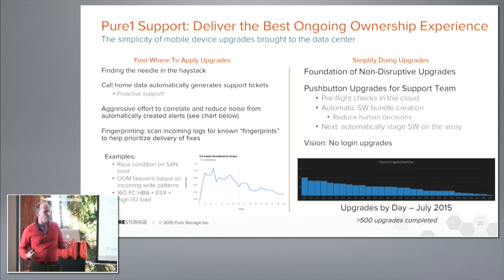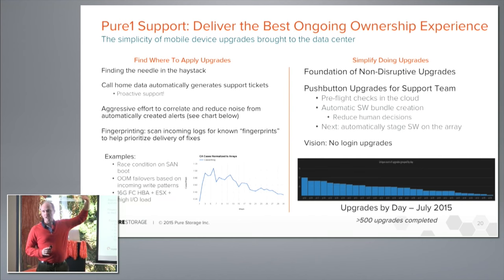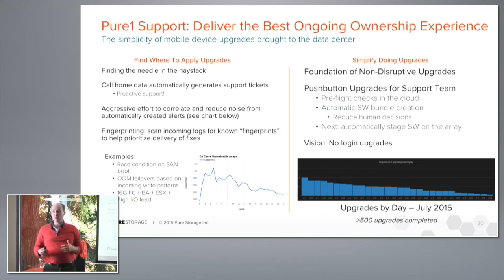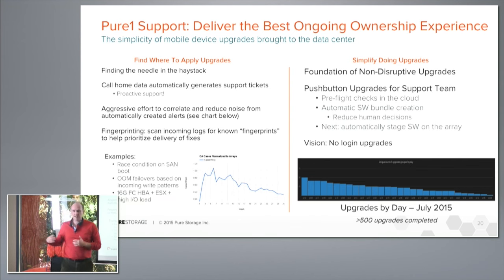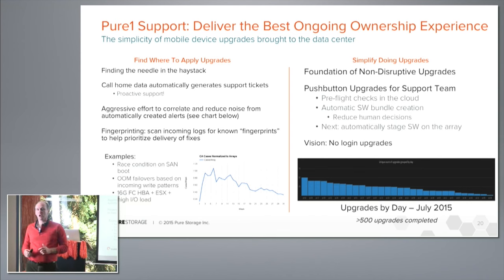As our business grows and the number of arrays scales, it's very important for us to focus our support team on the most important alerts — which ones of the thousands of alerts we may have are the really critical SEV1 issues versus, for example, an alert we generate when arrays start to fill up. If you get to 80% full, we generate an alert and might call you to ask if your workload is going to continue to grow and whether you'd be interested in getting more capacity. That's not a SEV1 issue. We want to focus on SEV1s first, and part of our goal has been to reduce the number of tickets we generate per array per week, which is shown in a normalized chart on the bottom right.